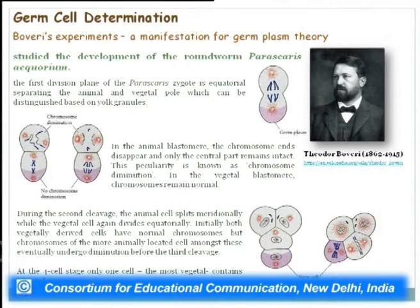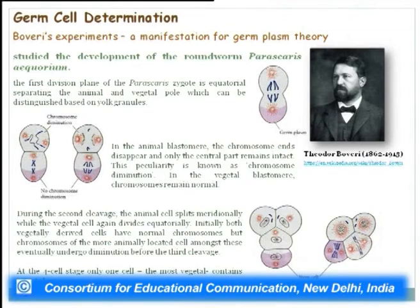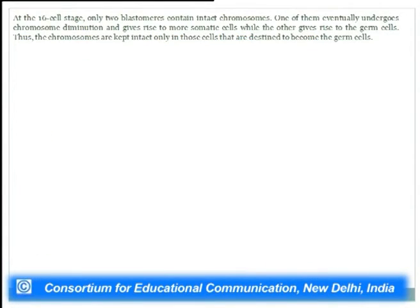During the second cleavage, animal cells split meridionally while the vegetal cell again divides equatorially. Initially both vegetally-derived cells have normal chromosomes, but the more animally-located cell eventually undergoes diminution before the third cleavage. At the four-cell stage, only the most vegetal cell contains intact chromosomes. At the 16-cell stage, only two blastomeres contain intact chromosomes — one gives rise to somatic cells after undergoing diminution, while the other, with no diminution, gives rise to germ cells.